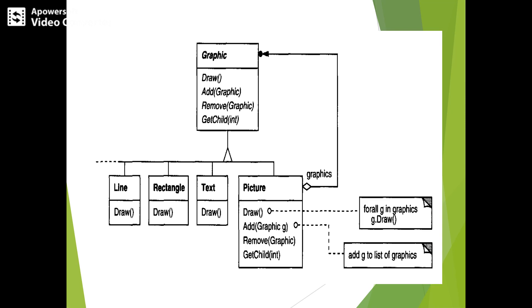The key composite pattern is an abstract class that represents both primitives and their containers. The major graphics class has respective operations: draw operation, add, remove, get child, append. The graphics class will have the respective subclasses: line, rectangle, text, and picture. All subclasses in graphics will have the respective methods.